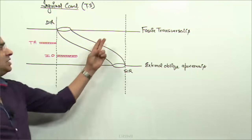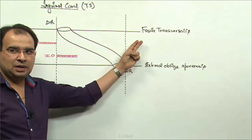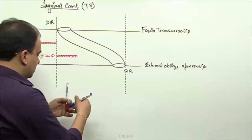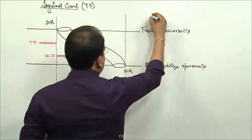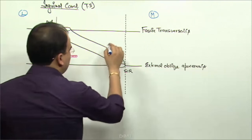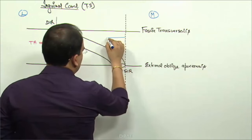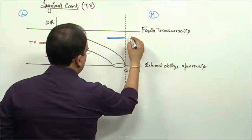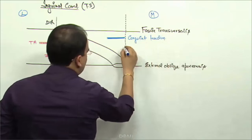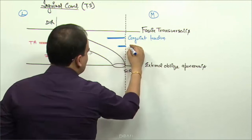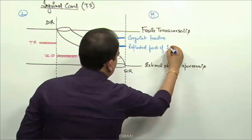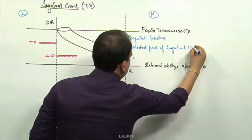The posterior wall in the entire extent is formed by the fascia transversalis. The difference toward the medial side is that the posterior wall is also made up of the conjoint tendon and the reflected part of inguinal ligament - the reflected part of inguinal ligament being on the medial side.